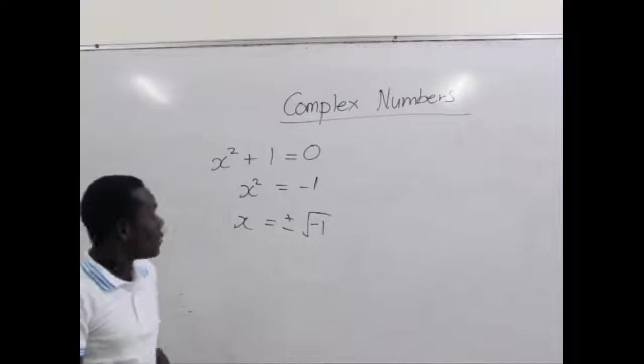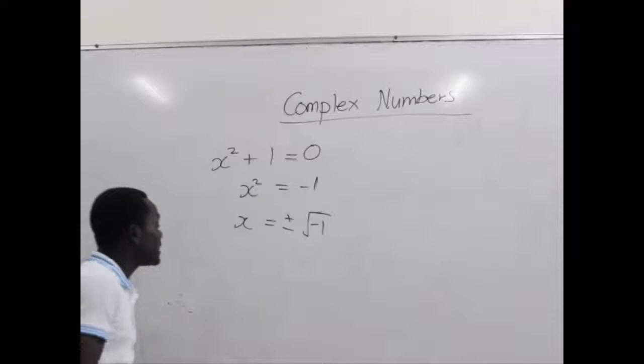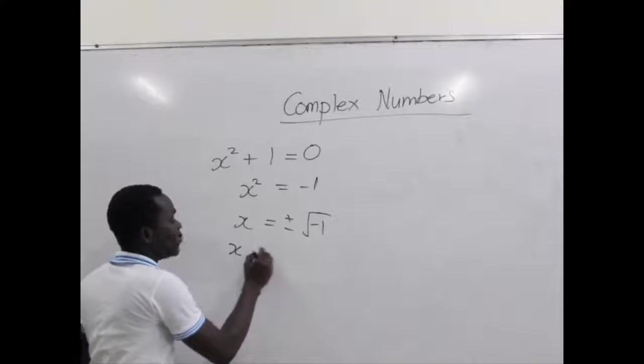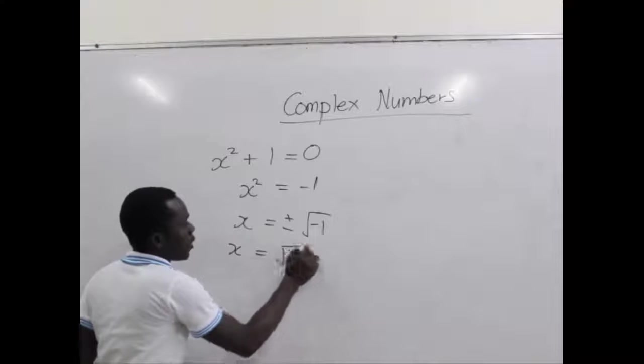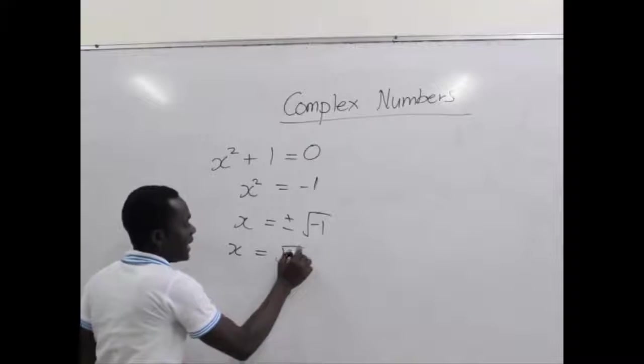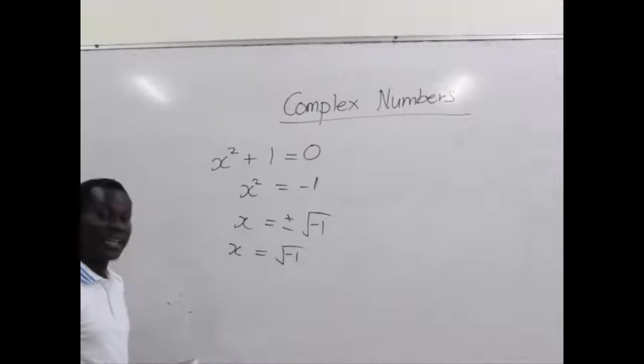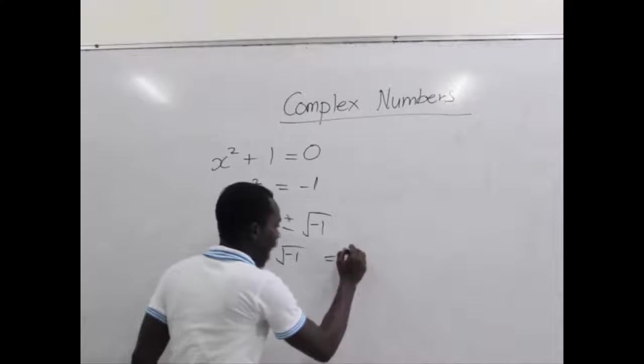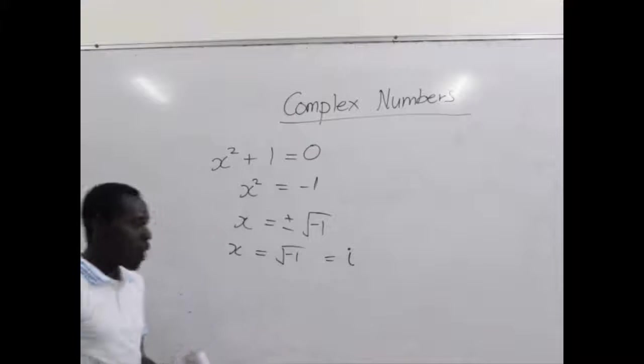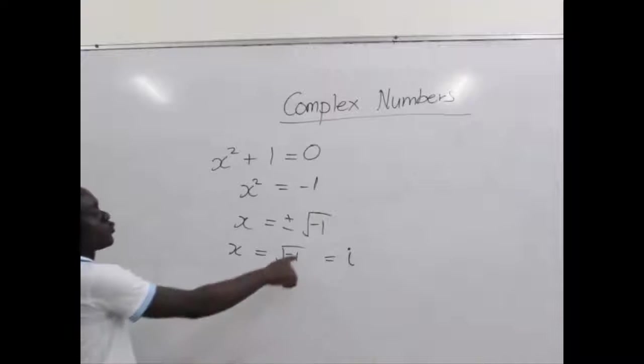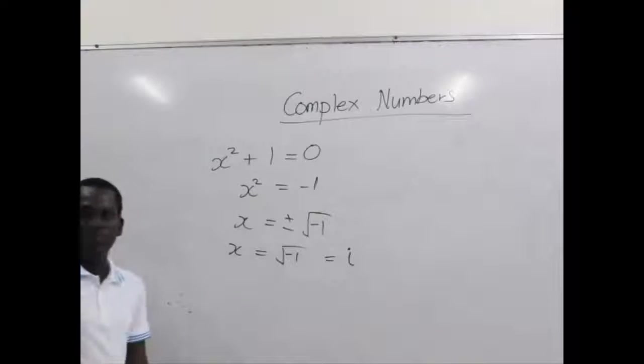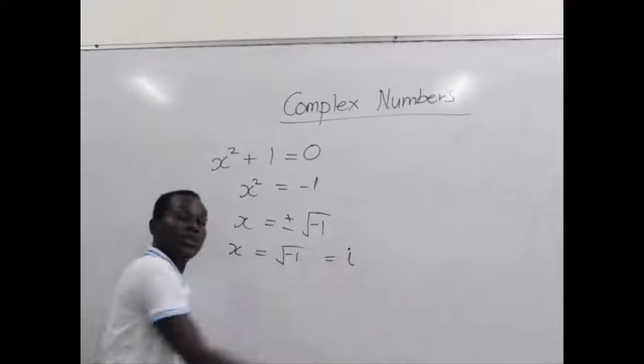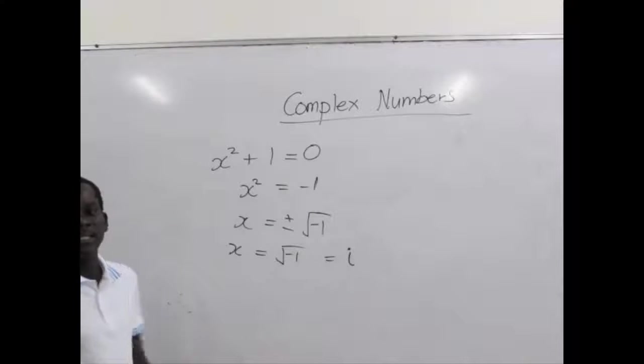They got to imagining and they all agreed that any time we have the root of a negative number, say the root of negative 1, we write it as i. So the symbol i stands for square root of negative 1, and this is how we got to have complex numbers.